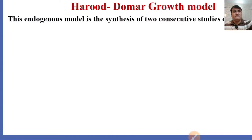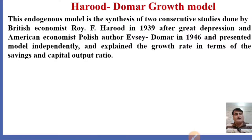This endogenous model is a synthesis of two consecutive studies: done by British economist Roy F. Harrod in 1939 after the Great Depression, and American economist Polish-born E. C. Domar in 1946. They presented their models independently and explained the growth rate in terms of saving and capital output ratio.